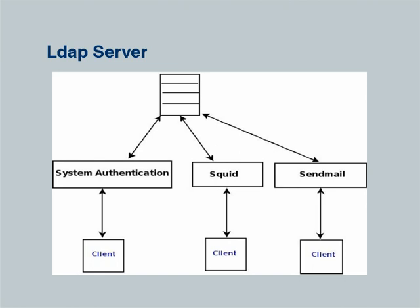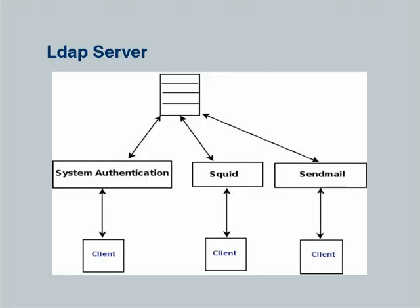There are a set of objects, each having attributes, and these objects are arranged in a hierarchy. We can take an example of a telephone directory - it is arranged by name of people and organization alphabetically, and every telephone directory has an address and a telephone number. So your whole name, address and telephone number acts as an object, and inside that you have attributes like name, address and number. Clients can use LDAP Server for system authentication, or for information related to Squid or Sendmail.